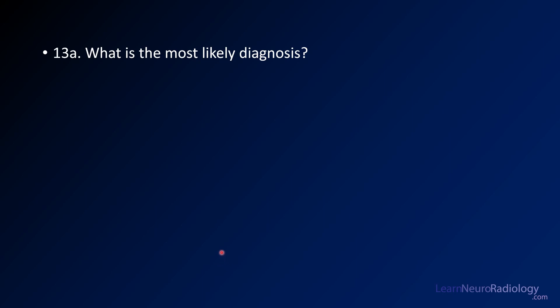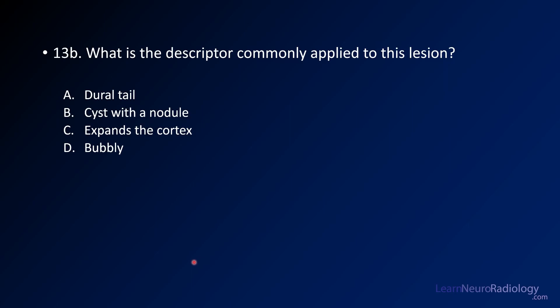The patient has seizure-like symptoms and kind of an ill-defined abnormality in the medial temporal lobe. Your second question is: what is the descriptor commonly applied to this lesion? Does it have a dural tail? Is it a cyst with a nodule? Does it have cortical expansion? Or is it bubbly?